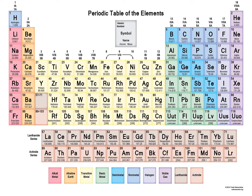If we move from left to right in a period, adjacent elements show similarity in properties. But as they move further apart, properties differ. As we move from left to right in a period, elements start as metals, then we come across metalloids, and finally they become non-metals. So properties keep changing from left to right. Moreover, valency also changes — every period starts with an element having 1 electron in the valence shell, and by the last element the shell is completely filled. Hence valency goes on changing from left to right in a period, and properties change accordingly.